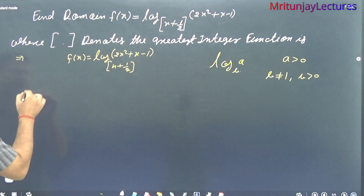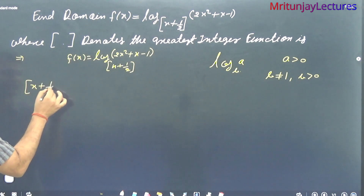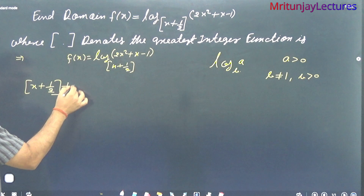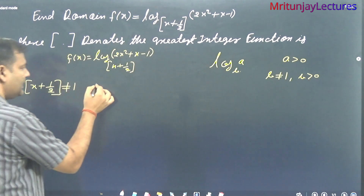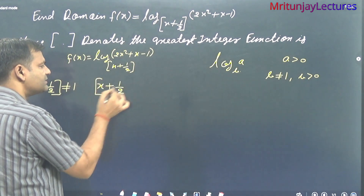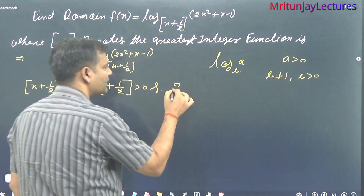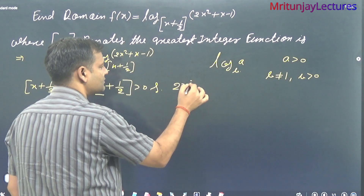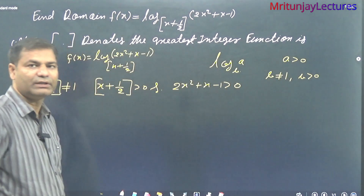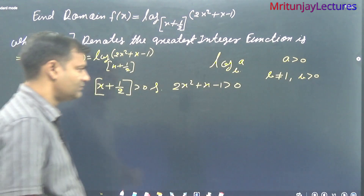From the conditions: the greatest integer of (x + 1/2) is not equal to 1, and (x + 1/2) is greater than 0. Also, the argument condition gives 2x² + x - 1 is greater than 0.